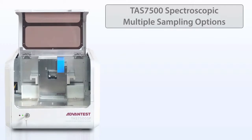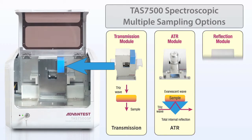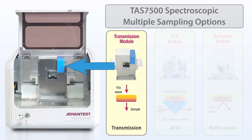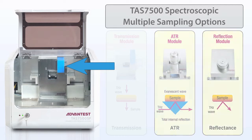The TAS7500 spectroscopy unit has multiple sampling options, like those used for infrared, including transmission, attenuated total reflectance or ATR, and external reflectance.